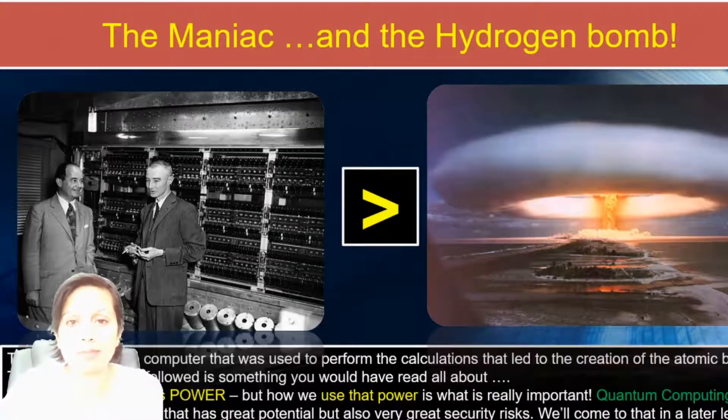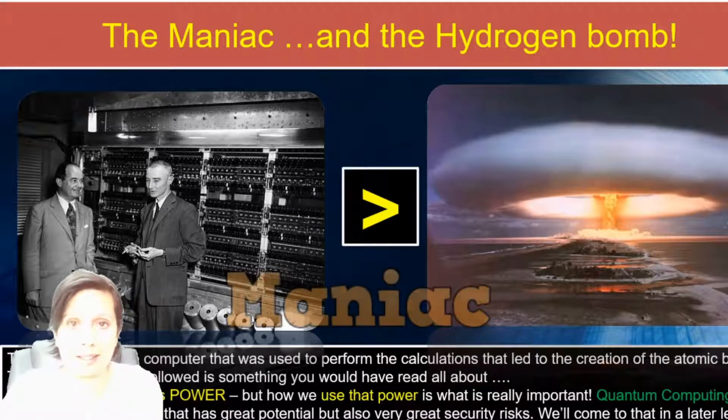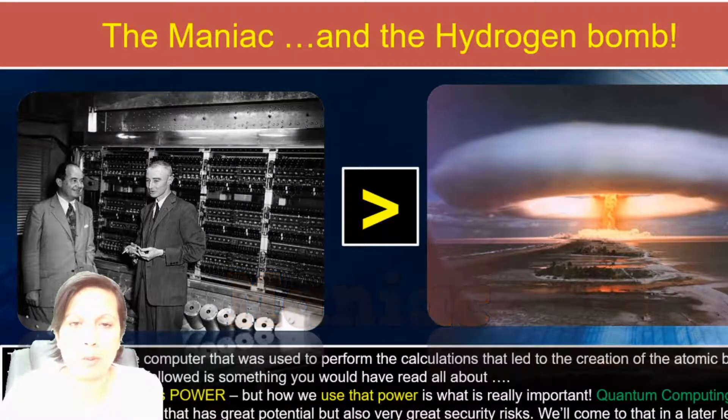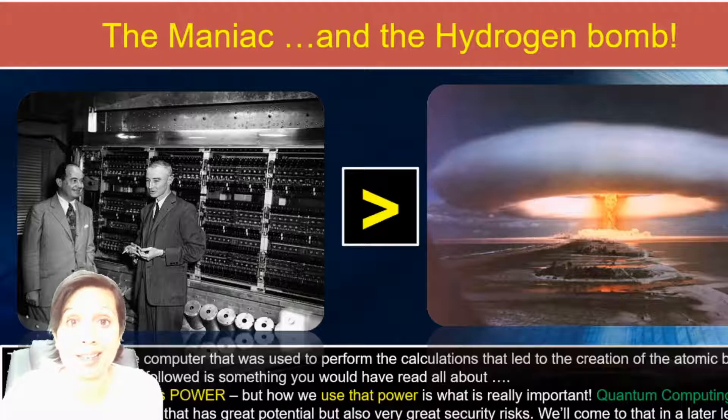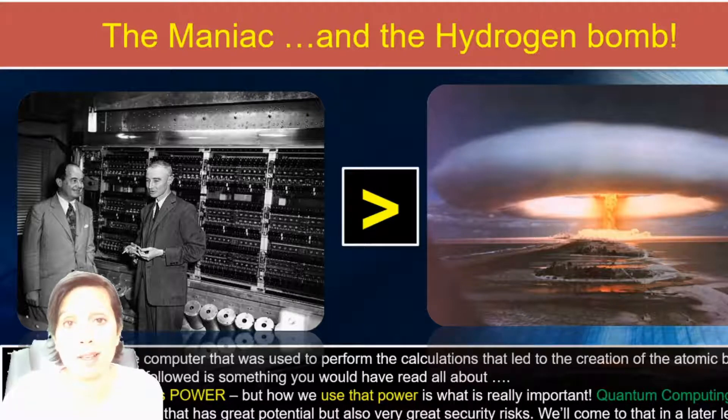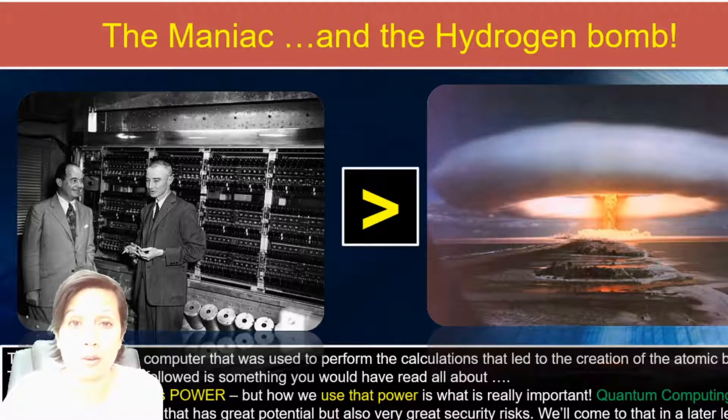Some of you may know that it was on the MANIAC, which is this machine, one of the early computers that is behind him in the picture, that he actually entered the calculations required for the atomic bomb. And it was that that we were seeing. It was the atomic bomb which was blowing up over Hiroshima and obviously causing the devastation that we saw.